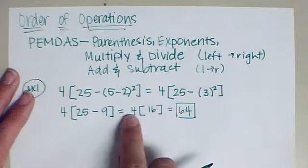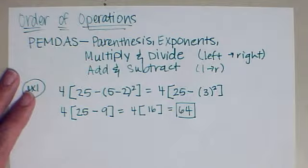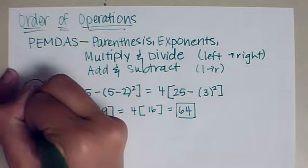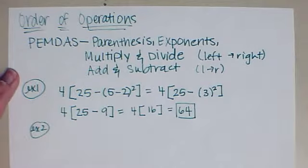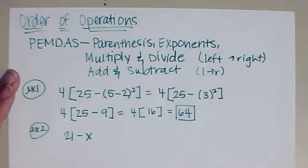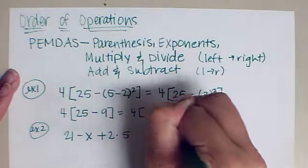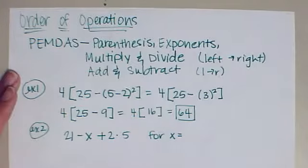Hopefully you already know this, but if not, anytime anything is next to each other or in parenthesis, that simply means to multiply. Let's try another example. Example 2: 21 minus x plus 2 times 5, for x is equal to 7.